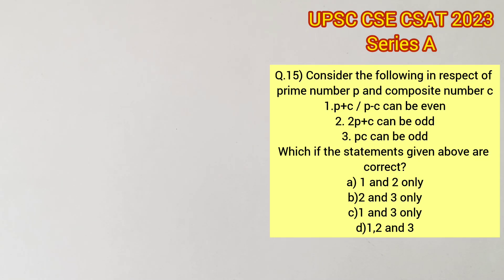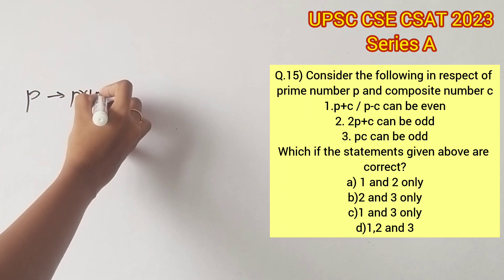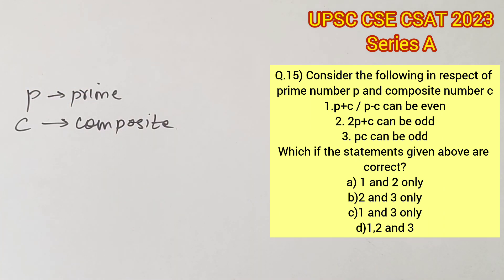Welcome to aptitude destination. Please pause the video and read the question completely. Given that p is a prime number and c is a composite number, they have given three statements out of which we have to find which ones are true.